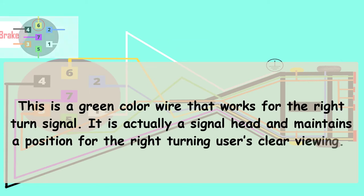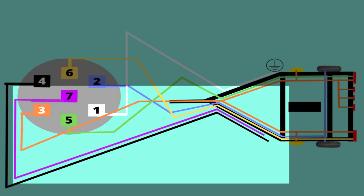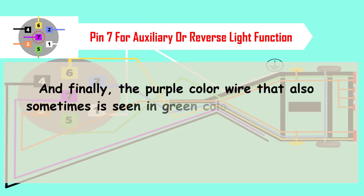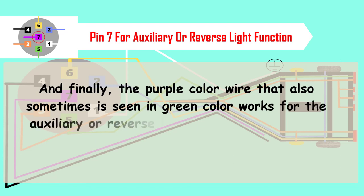Pin 7 is for auxiliary or reverse light function. Finally, the purple color wire that also sometimes is seen in green color works for the auxiliary or reverse light. The switch is in charge of maintaining any electrical performance that is within the vehicle.